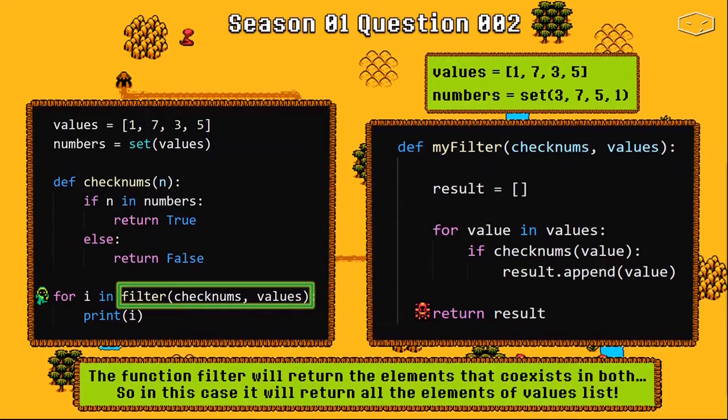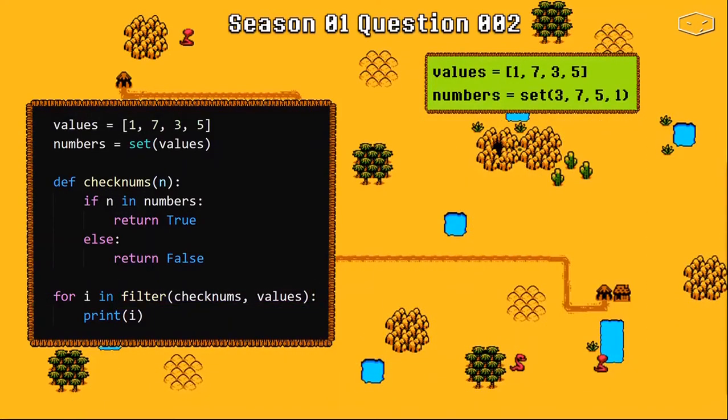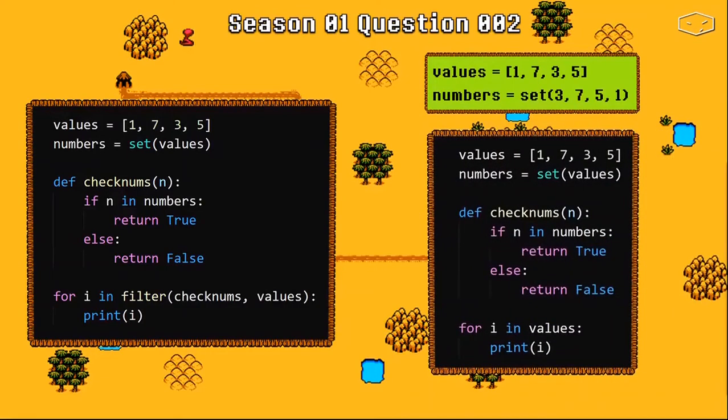So, knowing that the filter function is actually doing nothing in this specific code what is actually happening is for each element in values we are printing the element.